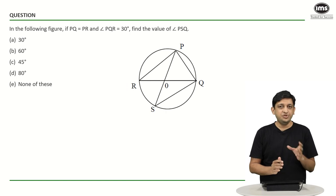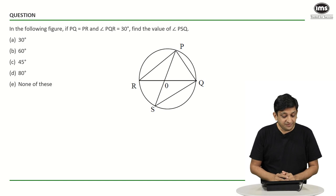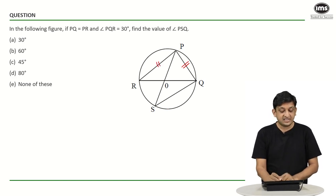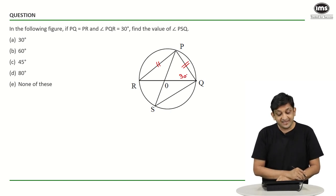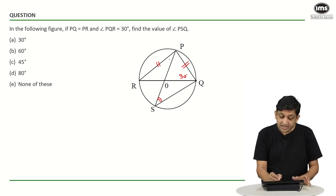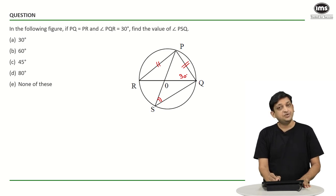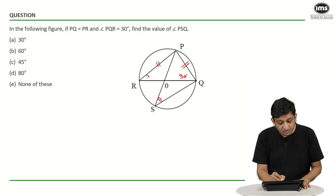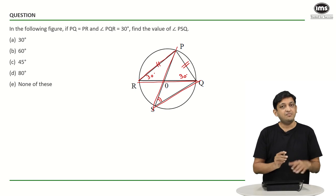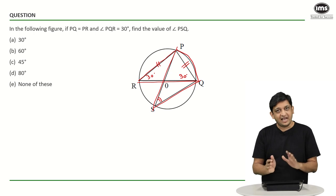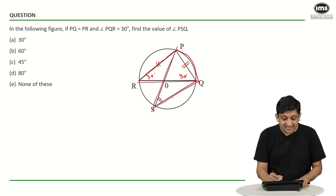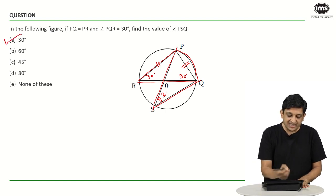This second question was straightforward if you know the inscribed angle theorem. Side PQ equals side PR, and angle PQR is 30 degrees. Because PQ equals PR, angle PRQ also equals 30 degrees. Now, both angle PRQ and angle PSQ are inscribed in the same arc PQ. By the theorem that angles inscribed in the same arc are equal, angle PSQ is also 30 degrees. The correct answer is option A: 30 degrees.